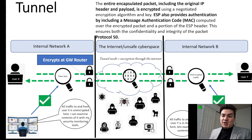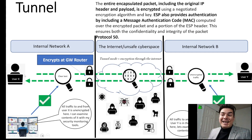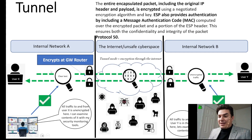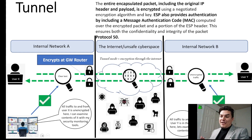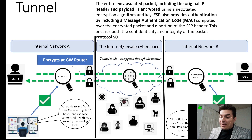How this process works is that this user makes an internet connection, and that internet connection all the way to the gateway router is in clear text. So everybody can read the message and the contents. As it gets encrypted at the gateway router, that's where it adds on that additional IP address, and the first IP address is encrypted with all the data.